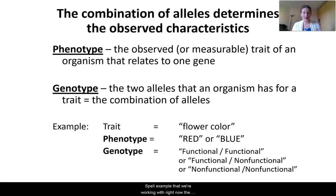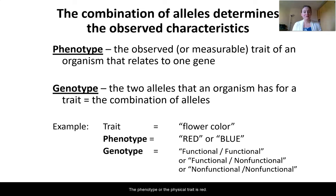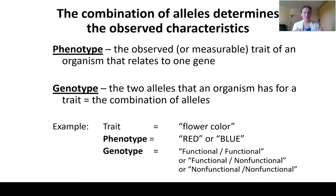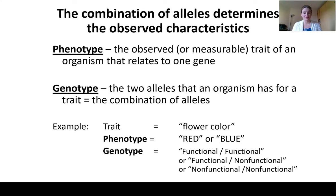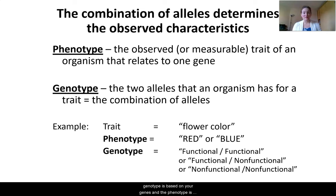In our example, the trait is flower color. The phenotype — the physical trait — is red or blue. The genotype is the alleles: functional/functional, functional/non-functional, or non-functional/non-functional. These words are very similar, so one way I remember which is which: genotype is based on your genes, and phenotype is your physical trait — GG and PP. It helps me, and it may help you.